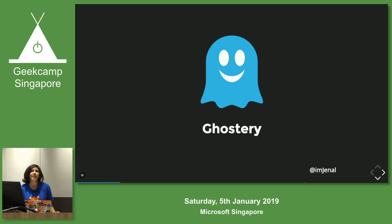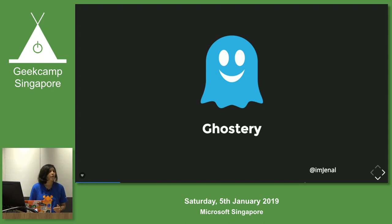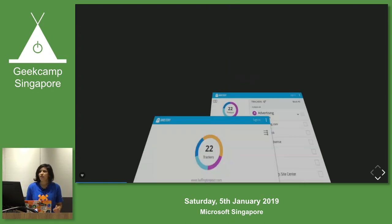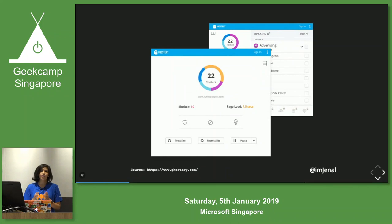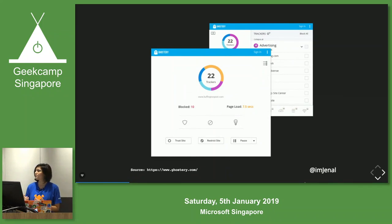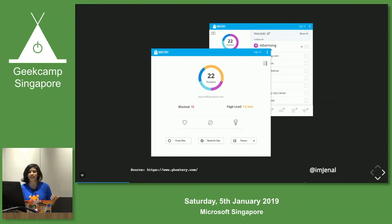Next is Ghostery. Ghostery is a privacy add-on which lets you know which tracker is tracking you on the particular site you are viewing, and you can actually block them.